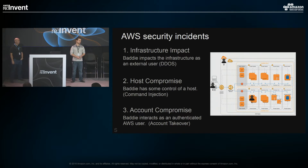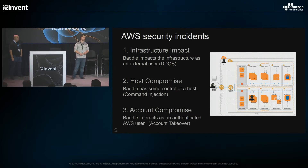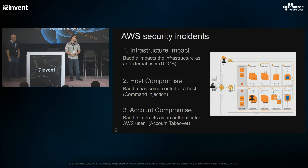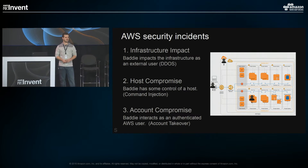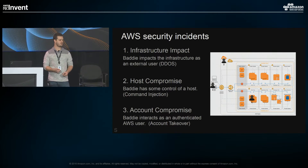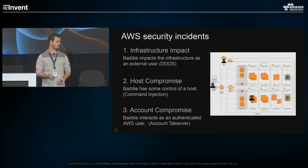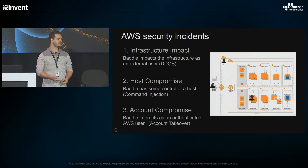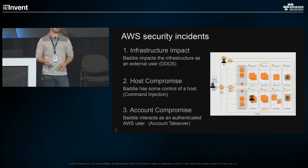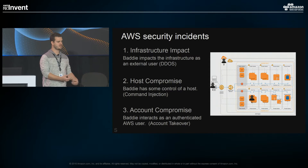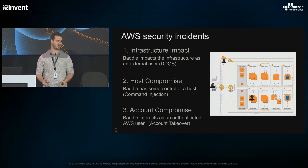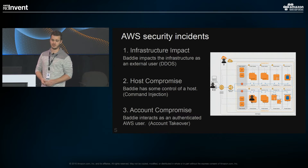The third type is very specific to cloud deployments: account compromise. This is where the bad actor is interacting with your cloud provider as an authenticated AWS user. That means they've managed to get a hold of a user's AWS console username and password, or got access to an API key — either through a compromised dev machine or someone accidentally pushed something with your API key to GitHub. This can by far be the most damaging compromise you can run into in AWS, depending on what permissions that account has.